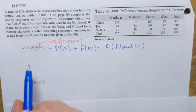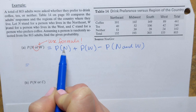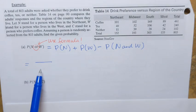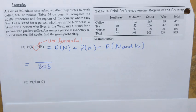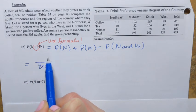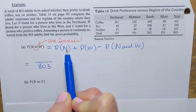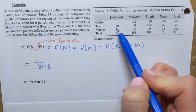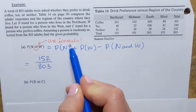First, we're going to find the probability P of N — the probability that the randomly selected person is from the northeast. We set up a probability fraction: the denominator is the total number of all possible outcomes, which is 803. In the numerator, we write the number of desired outcomes. Based on the table, the total number of people from the northeast is 152. So P(N) = 152/803.